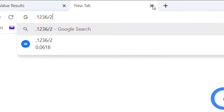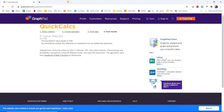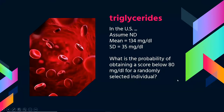That tells us there are only about 6% of cases that would be at this score or lower for a random person from this distribution, so this person has a relatively low triglyceride count.